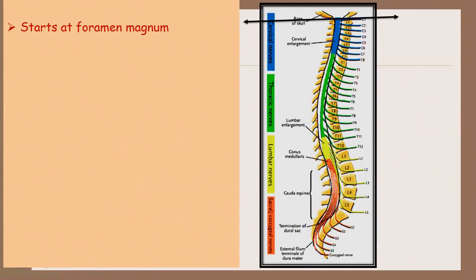Spinal cord starts at foramen magnum at the level of cervicomedullary junction and it ends at the level of lower border of L1.